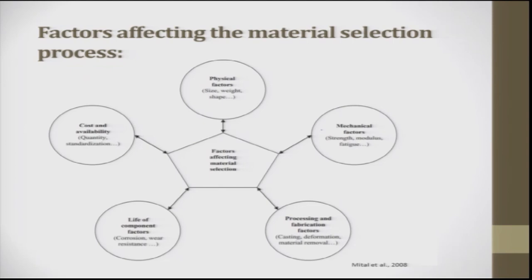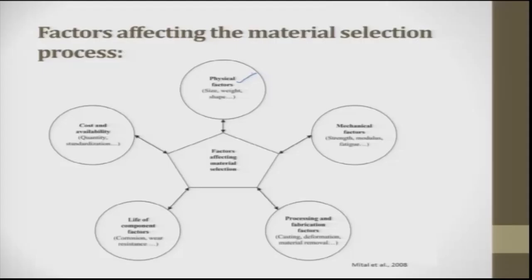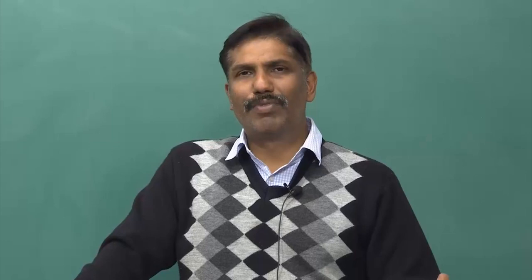The factors affecting the material selection process: first is physical form — size, weight, and shape. Today we expect a product to be as light as possible, with more comfort, customized smooth and sleek shapes, and as small a size as possible. For example, cell phones: the first cordless phone weighed around 1.5 kilos, whereas today we talk about a cell phone of 100 grams or less.